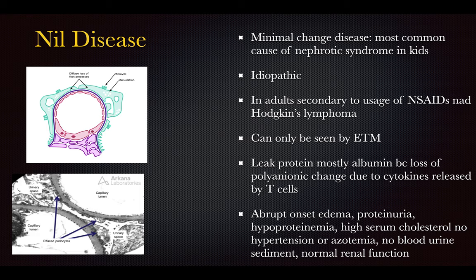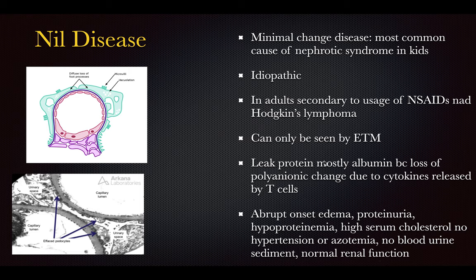Nil's disease, or minimal change disease, is the most common cause of nephrotic syndrome in children. It is idiopathic in children but secondary to NSAID use or Hodgkin's lymphoma in adults. It can only be seen by electron microscopy. There is leakage of albumin due to a polyanionic charge loss caused by cytokines released by T-cells. It is characterized by sudden onset of edema and proteinuria but with normal renal function. Importantly, identifying the underlying disease — NSAID overuse or Hodgkin's lymphoma — is the priority.